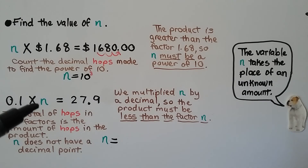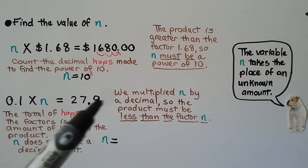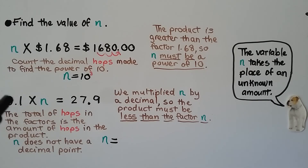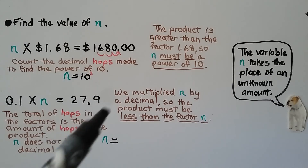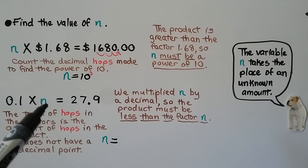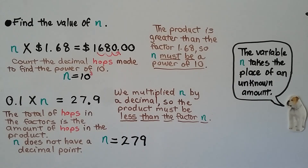Here we have one-tenth times some amount n is equal to twenty-seven and nine tenths. We multiplied n by a decimal, and it has a one, so we know n is going to involve a two, a seven, and a nine. We just need to know where the decimal point is supposed to be. The product must be less than the factor n. The total of hops in the factors is the amount of hops in the product — we have one hop for one-tenth, and our product has one hop. If all the hops in the factors equal the hops in the product, and we have one and one, that means n must not have any hops or any decimals. So n must involve a two, a seven, and a nine, and without a decimal point it must be two hundred seventy-nine. One-tenth times two hundred seventy-nine is twenty-seven and nine tenths.